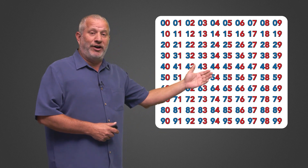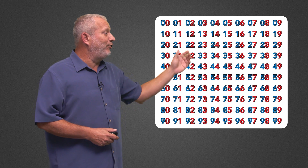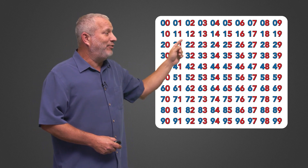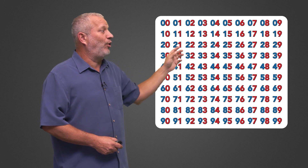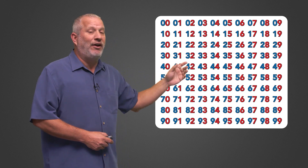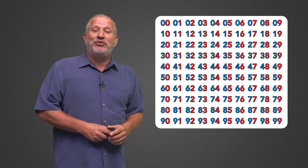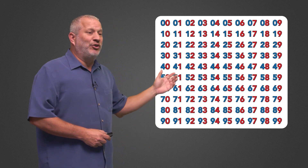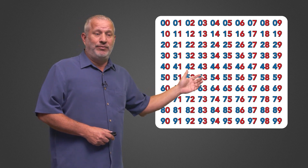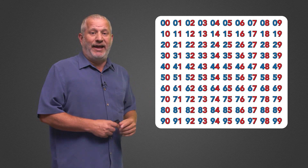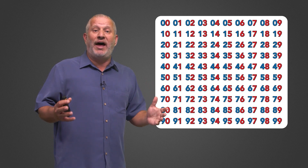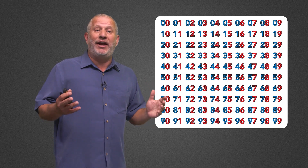But with this number grid of 00 through 99, you'll notice that it has 0 through 9 on the top row, 10 through 19 on the next row, and then 20 through 29, 30 through 39, all the way to 90 through 99. On this number grid we've made all the left digits blue and all the right digits red, just to show you that this number grid is really just 0 through 9 over and over again.